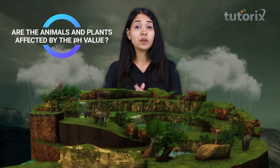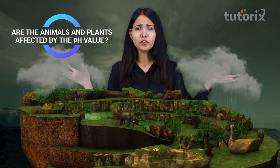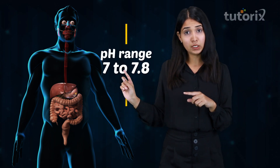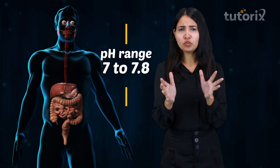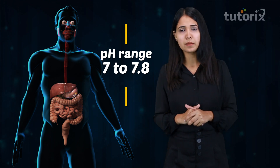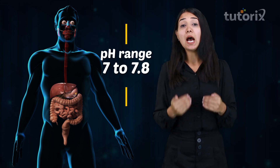Do you think that animals and plants are also affected by this pH range? What about our own body? Our body works effectively within the pH range of 7 to 7.8 — the neutral region. Not just our body, many other living organisms can work effectively only within this pH range.